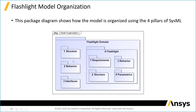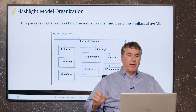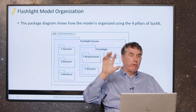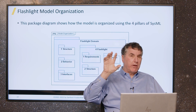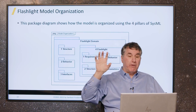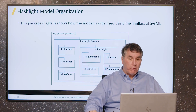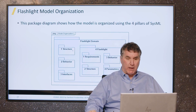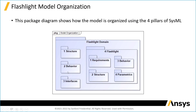There's data at the context level. For example, the flashlight domain, the external systems, the external users, and the physical environment will reside in this structure package. The top-level use case and top-level behavior will reside in this behavior package. Some of the interface information that spans the entire model will reside in this interfaces package.